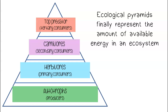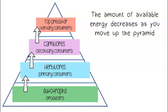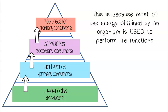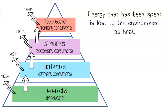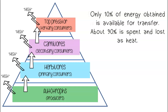Ecological pyramids represent the amount of available energy in an ecosystem. The amount of available energy decreases as you move up the pyramid. This is because most of the energy obtained by an organism is used to perform life functions. Energy that has been spent is lost to the environment as heat. Only 10% of energy obtained is available for transfer; about 90% is spent and lost as heat.